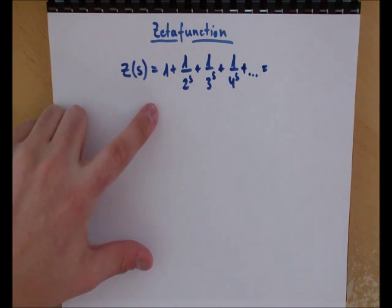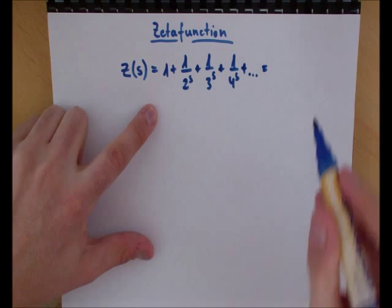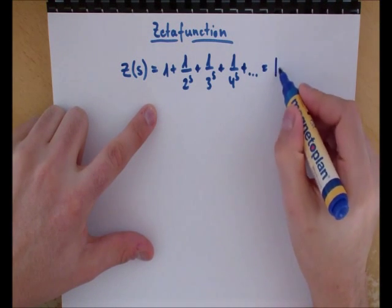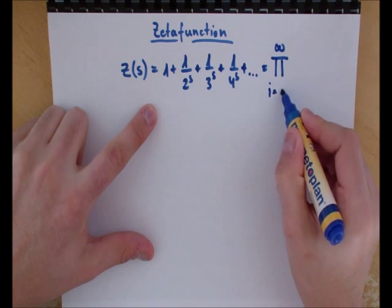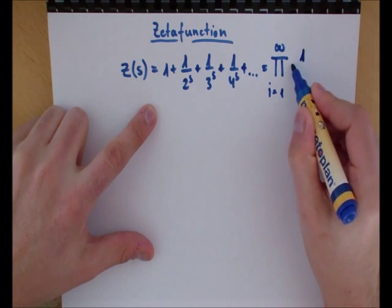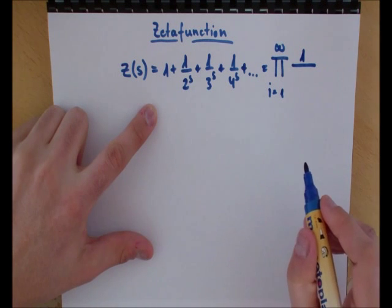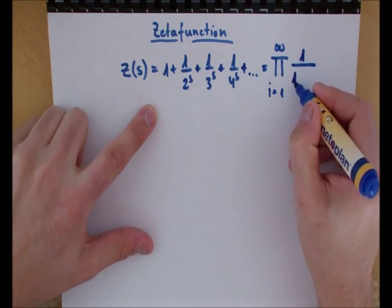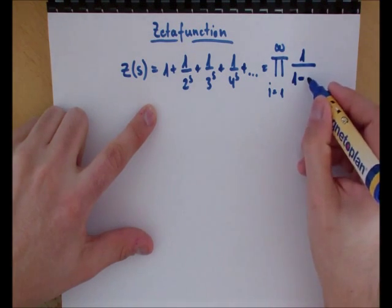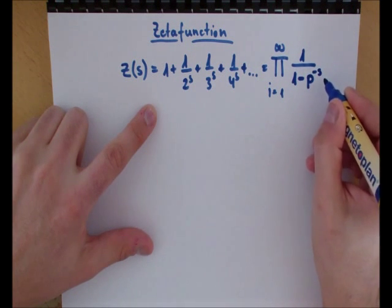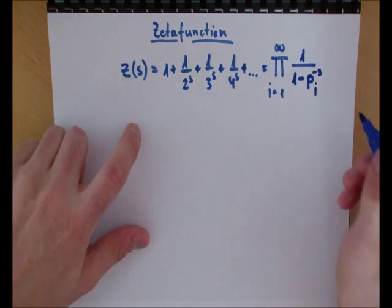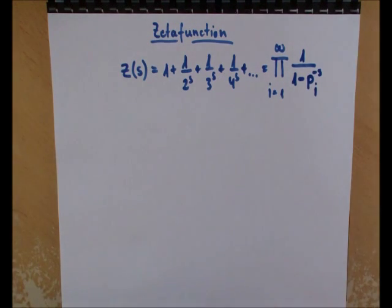What one can do is actually rewrite this in such a manner: it's equal to a product from i=1 to infinity of 1 over (1 - p_i^(-s)). P_i is the prime number, and this is the s variable.